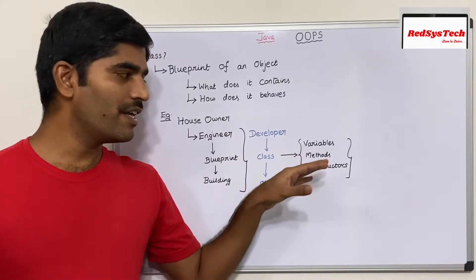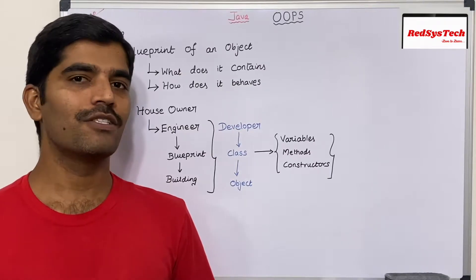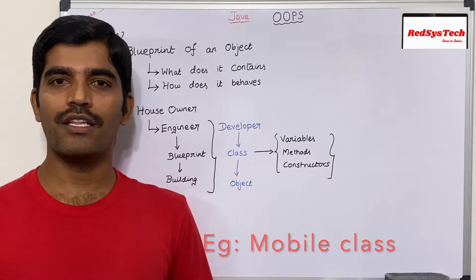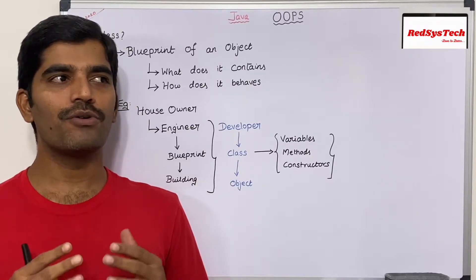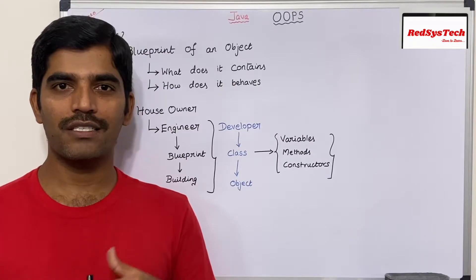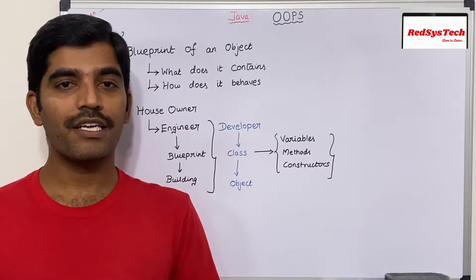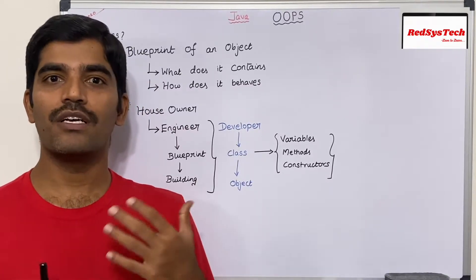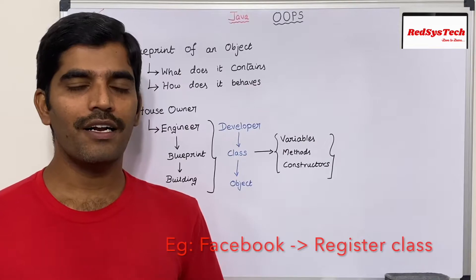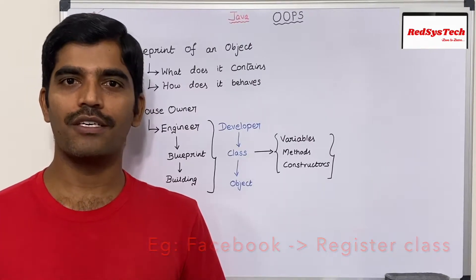A class contains variables, methods, and constructors at a high level. Variables represent what the class contains — its properties. I'd like to explain this class with two examples. The first is mobile phones. Let's say I have two mobile phones — one is an iPhone and the other is a Samsung. If I want to define properties common to all mobile objects, I can create a class called Mobile and for each phone create an object using that class as a blueprint.